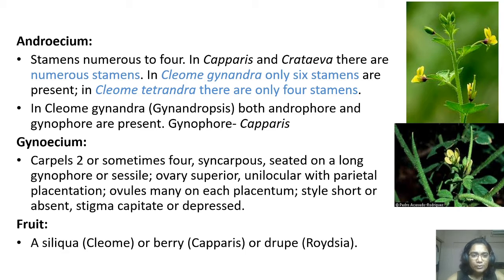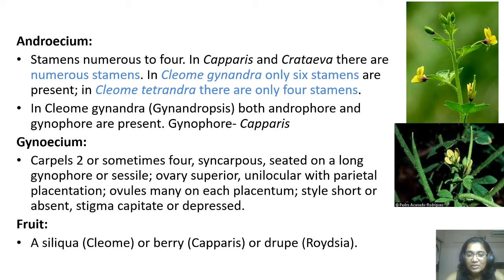Gynoecium: carpels two, sometimes four carpels, seated on a long gynophore or sessile. If the gynophore is not there, it must be sessile. Ovary superior, unilocular with parietal placentation. Ovules many on each placenta. Style short or absent, stigma capitate or depressed. Capitate means cap-like. Fruit siliqua, or berry, or drupe — so these three types of fruits are present in this family.